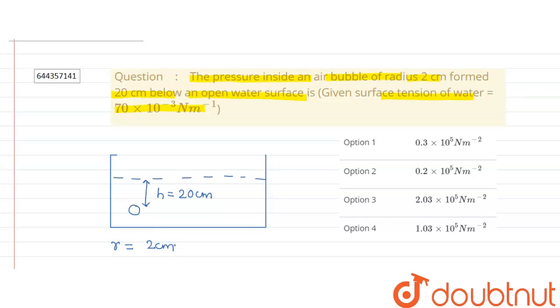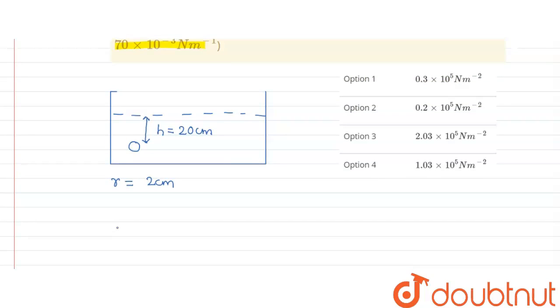What we have to find? We have to find the pressure inside this bubble. The air bubble will experience three pressures. First pressure will be due to height h, second pressure will be the atmospheric pressure which is p0, and third pressure will be excess pressure.